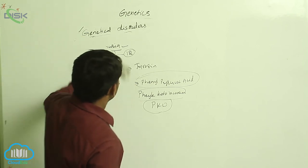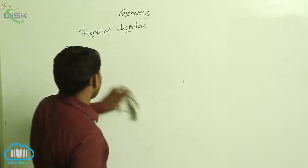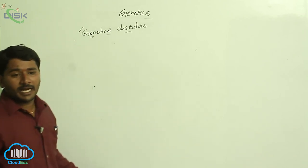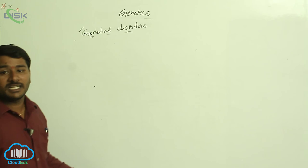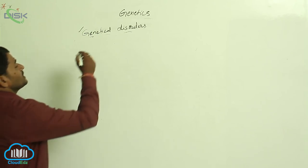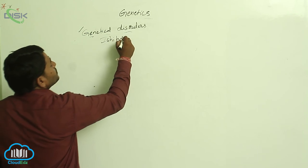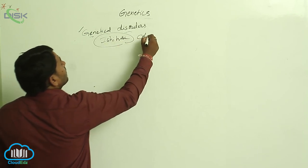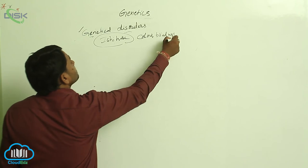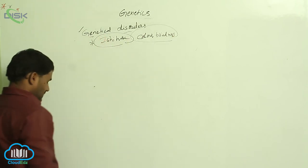In class, we have discussed color blindness. Color blindness can be identified by the Ishihara test — this is an important point to remember.